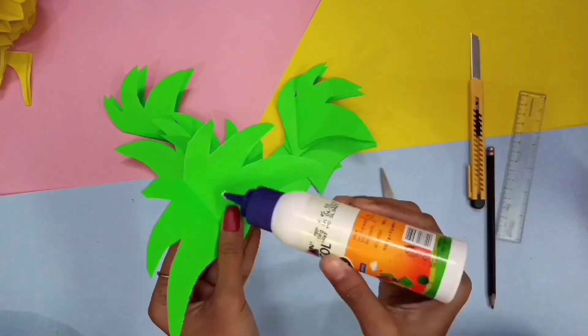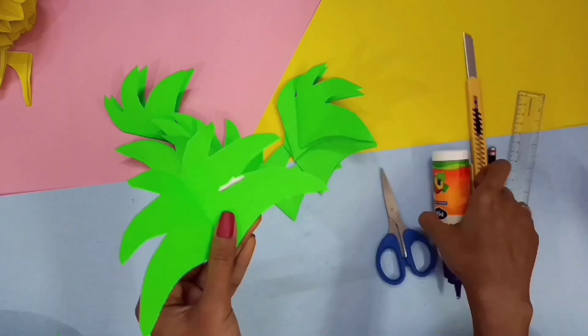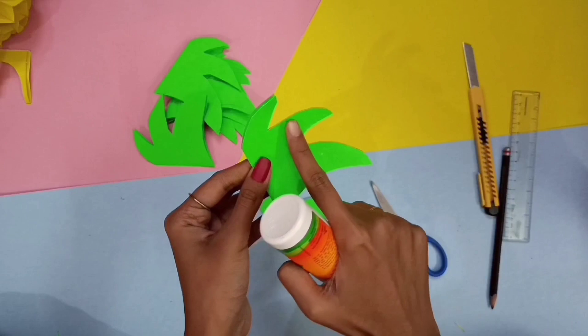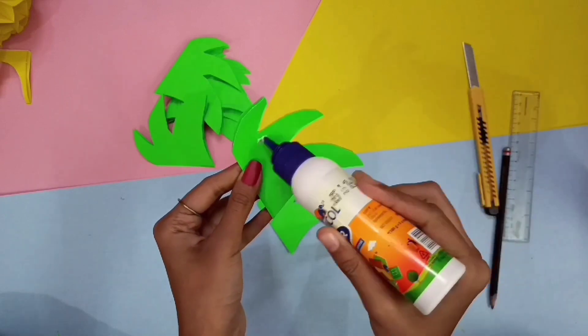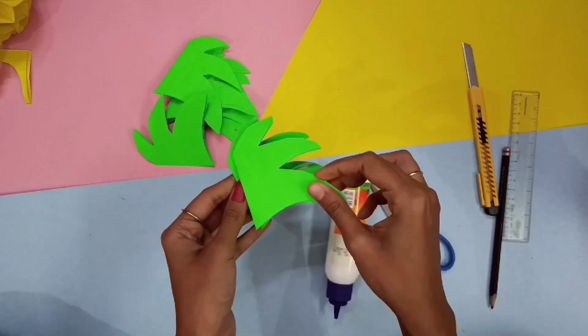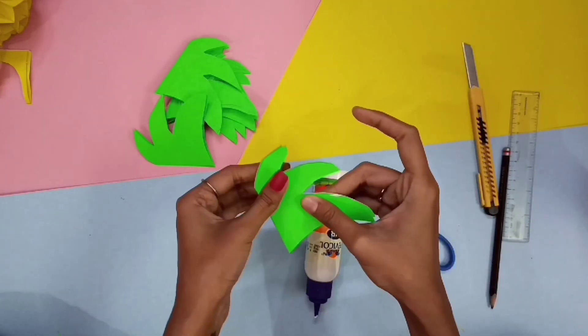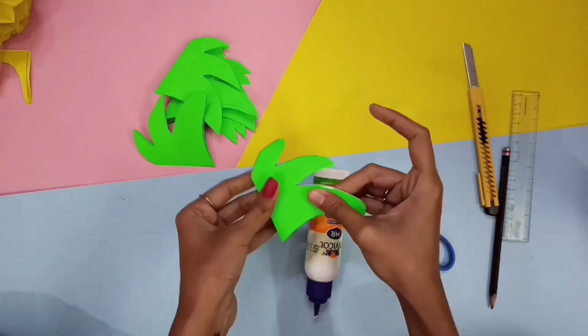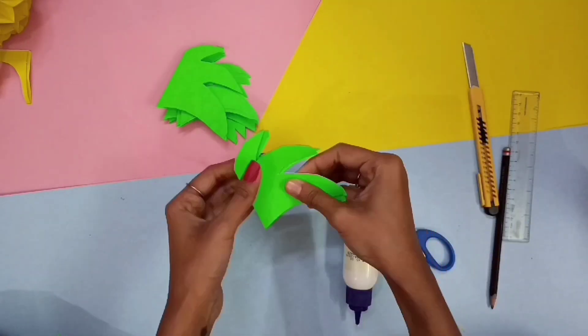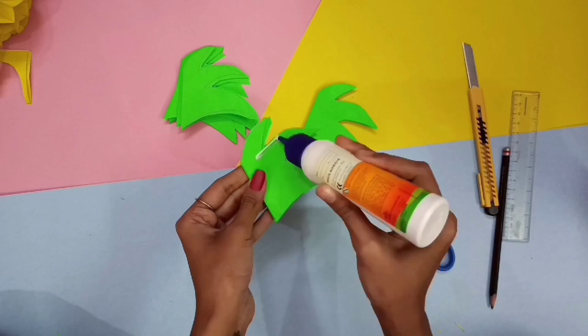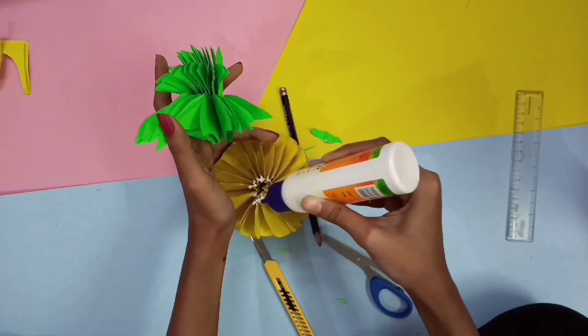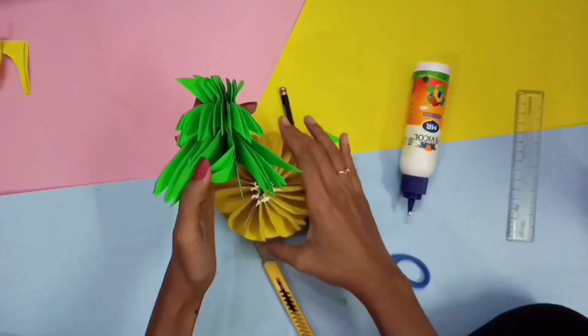Now apply glue in the middle part of the inside and upper and lower part of the outside. Now do the same with every piece of paper. Let it completely dry and open it gently and apply glue in the ending.